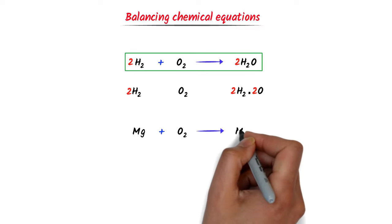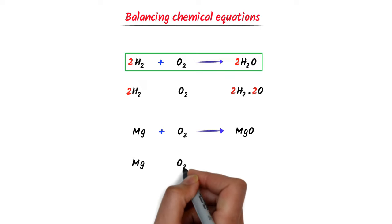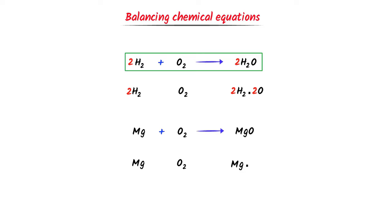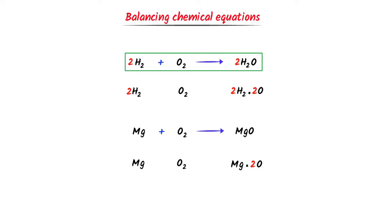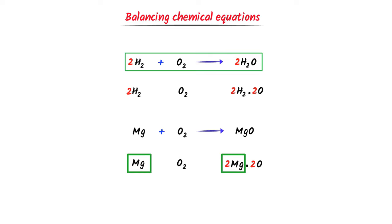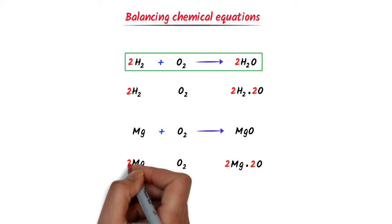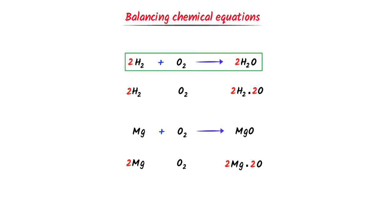Now consider balancing: Mg + O₂ → MgO. According to the law of conservation of mass, there are two oxygen atoms on the left and one on the right, so I place 2 with MgO — oxygen is balanced. Since oxygen is attached to magnesium, I place 2 with Mg as well. On the left there is one magnesium and on the right there are two, so I put 2 with Mg — magnesium is also balanced. The balanced equation is: 2Mg + O₂ → 2MgO.